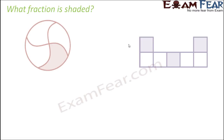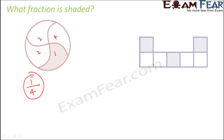Now let us look at these pictures and decide what fraction of the picture is shaded. In the first example, you see a circle divided into four parts, but not all four parts are shaded. There are four parts total — parts one, two, three, and four — and only one part is shaded. That means one part out of four parts is shaded, so we can say one-fourth of the circle is shaded.